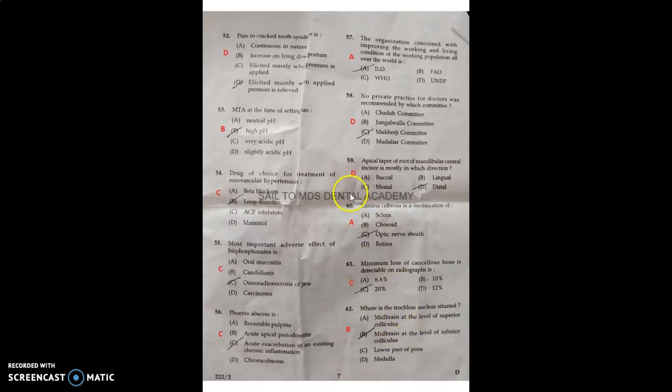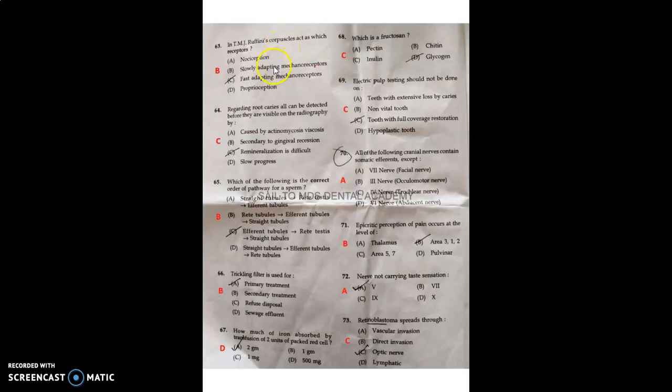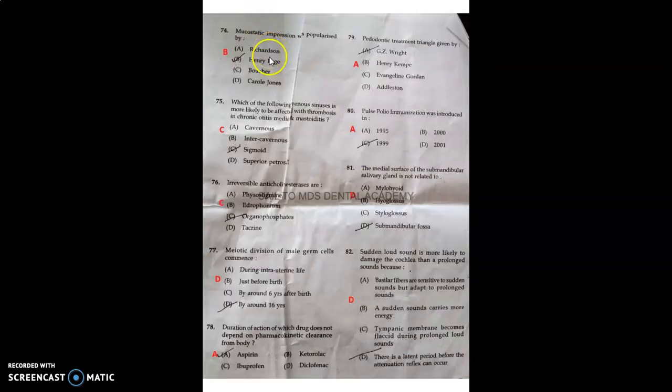Minimum loss of cancellous bone detectable on radiograph is 20%. The trochlear nucleus is situated in midbrain at the level of inferior colliculus. In TMJ, Ruffini corpuscles can act as slowly adapting mechanoreceptors. Regarding root caries, all can be detected before they're visible on radiograph but remineralization is difficult. The correct order of pathway for sperm is rete tubules, efferent tubules, and straight tubules. Trickling filter is used for secondary treatment. Two units of packed RBCs contain 500 milligrams of iron, as one unit has 250 milligrams. A polysaccharide of fructose is inulin. Electric pulp testing should not be done on tooth with full coverage restoration. All the following cranial nerves contain somatic efferent except cranial nerve 7. Epicritic perception of pain occurs at the level of area 3 and 2. The nerve not carrying taste sensation is the fifth cranial nerve. Retinoblastoma spreads through optic nerve. Mucostatic impression was popularized by Henry Page.